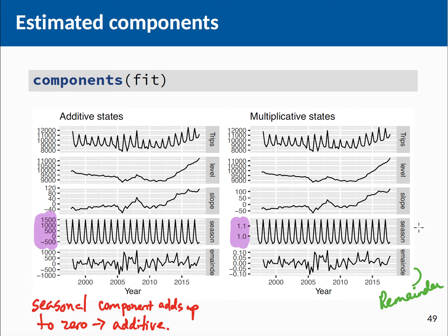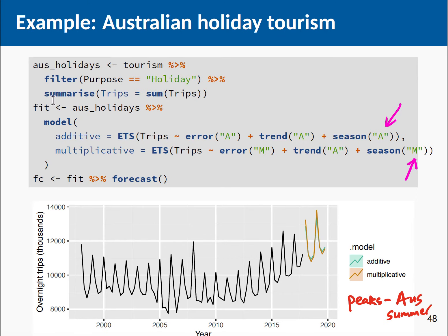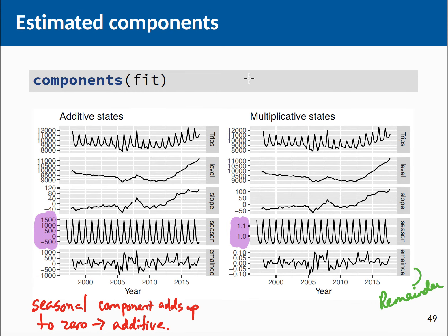You can also examine the components from different models. When looking at components from the two fitted models, note that in the additive model the seasonal components add up to zero within a given year. But for the multiplicative model, the seasonal components add up to the frequency of the season itself — for example, 4 for quarterly data or 12 for monthly data.